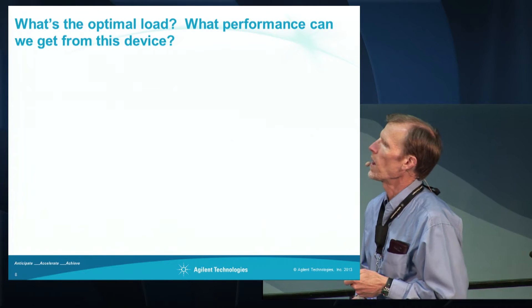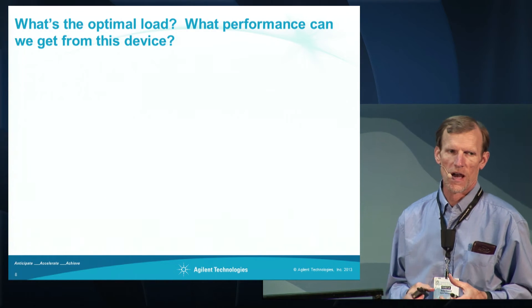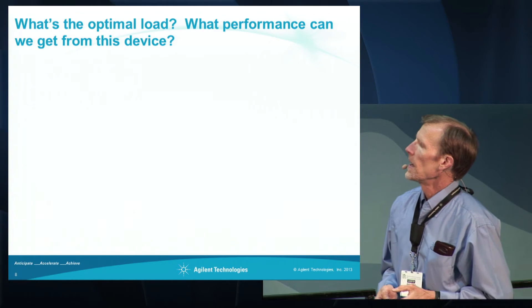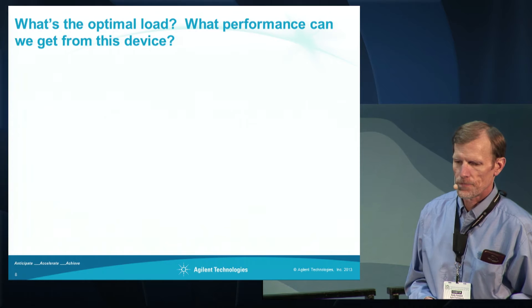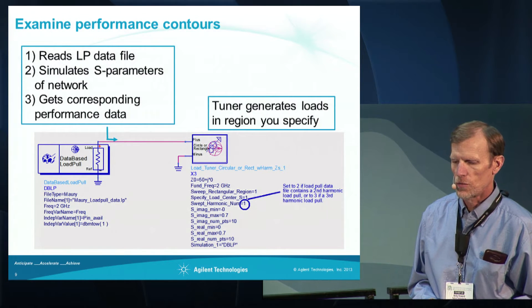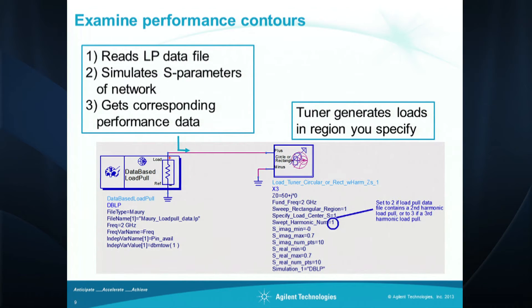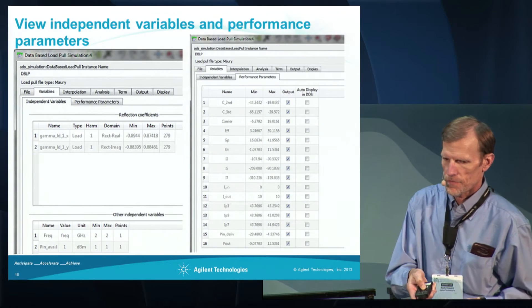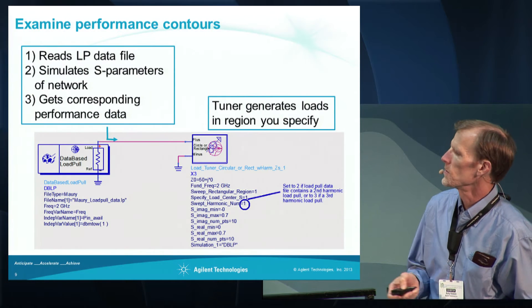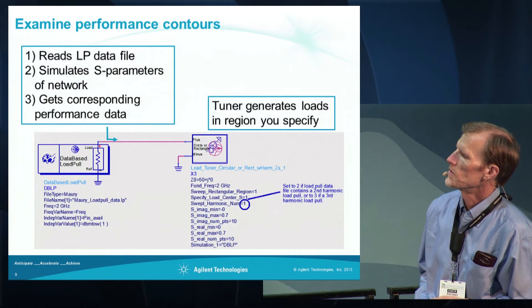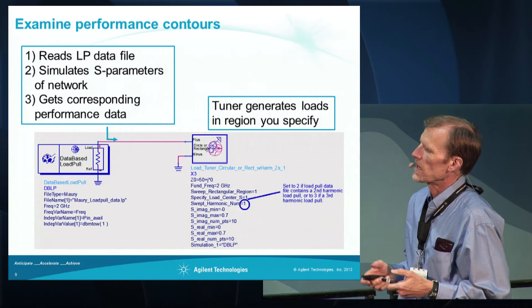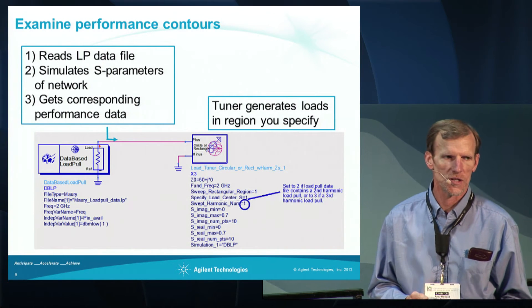What we'd like to know is what's the optimal load to present to this device to get the best performance from it, and what performance we can get from it as well. If you're given the file from somebody — say from a PA vendor or a device vendor — you can use this database load-pull component, which is new to ADS 2011, to read in the data file and look at the contours with the ADS data display.